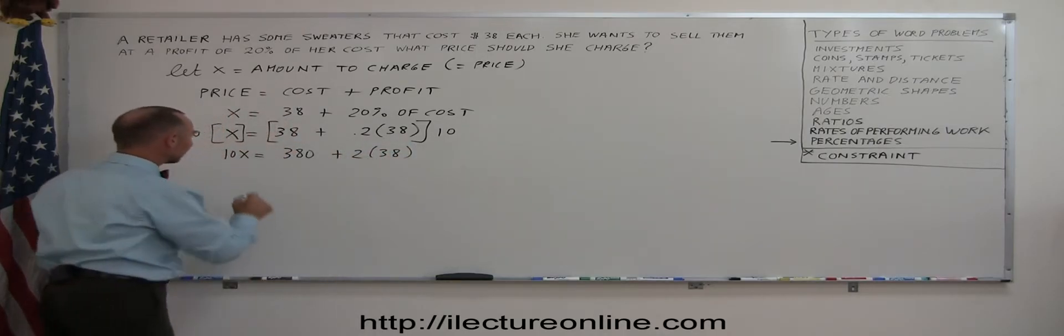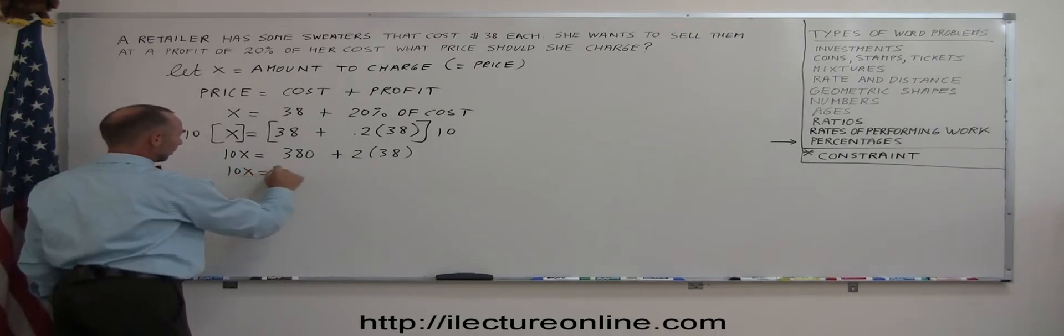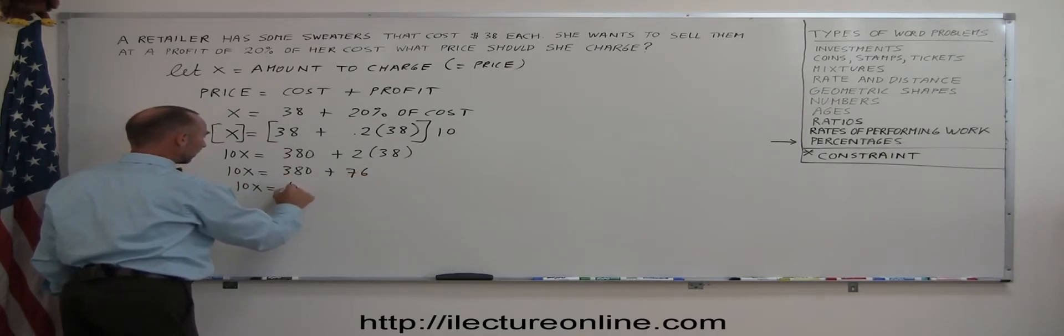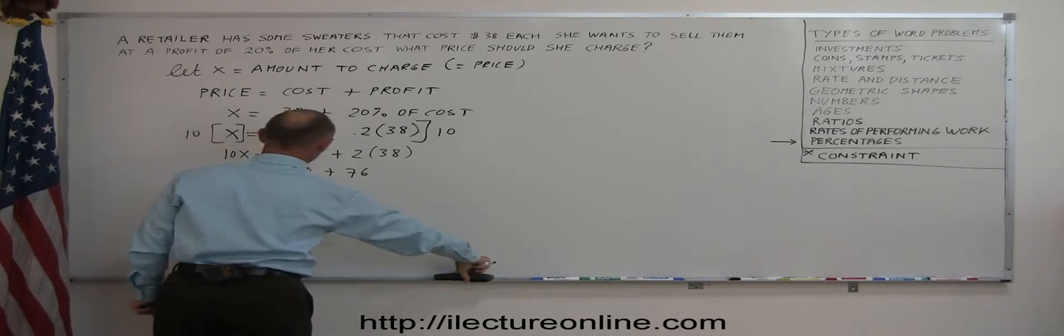Now we go ahead and multiply this out. We have 10X equals 380 plus 76. So 10X equals, add that together, we get 456.